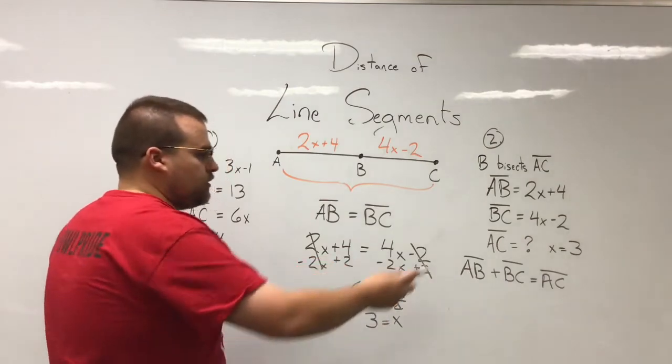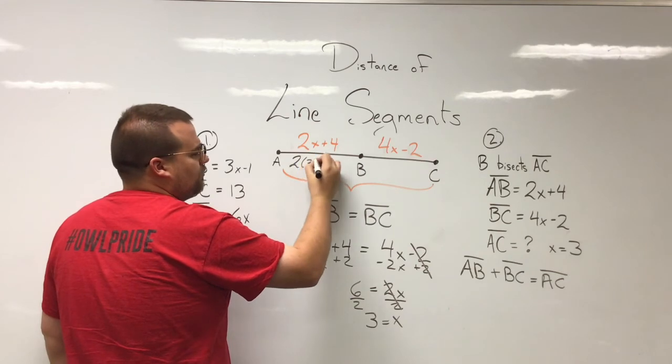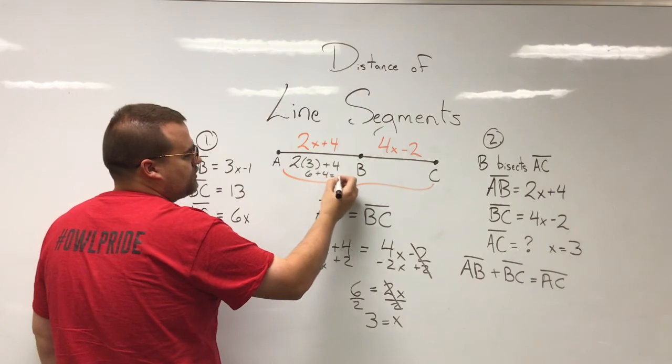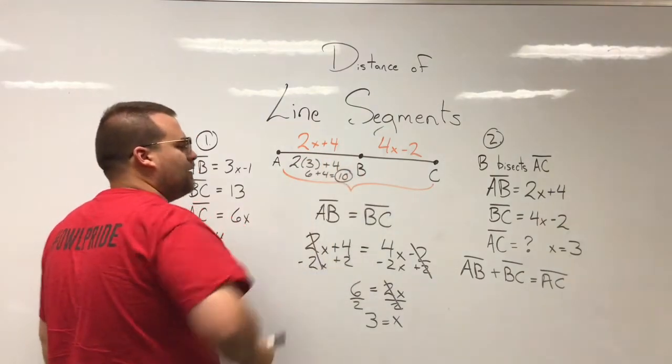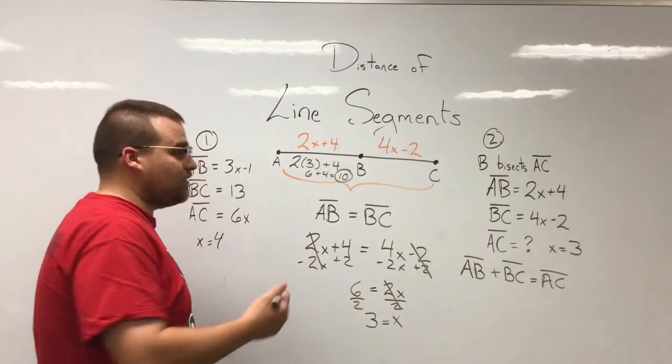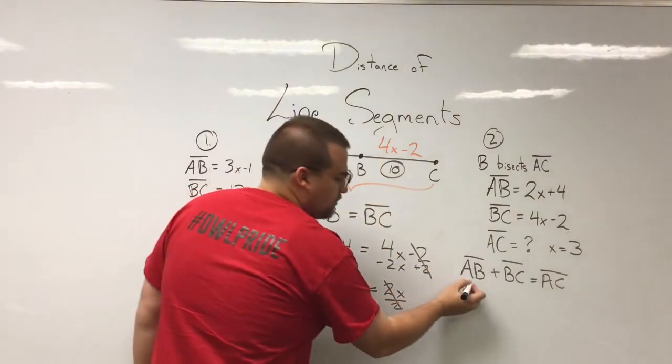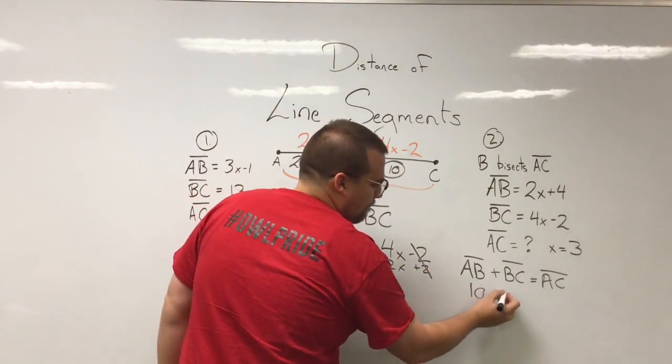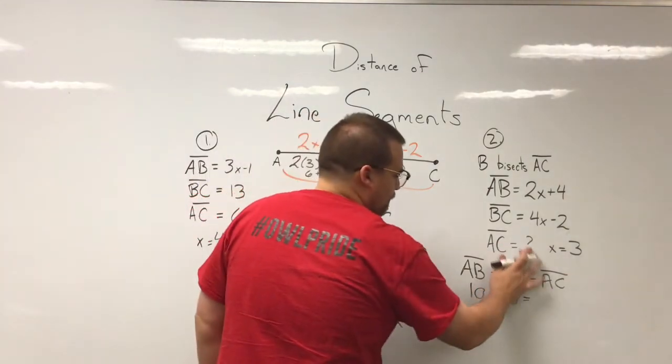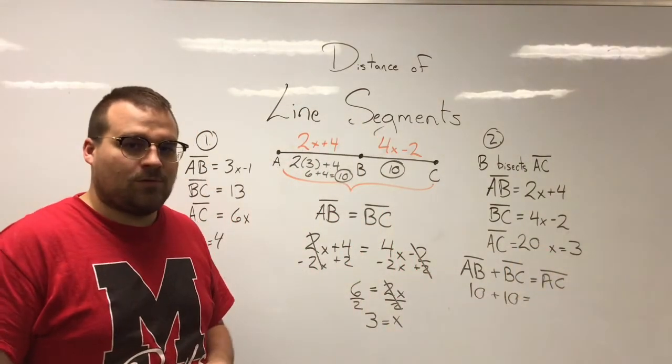So let's go ahead and take that value of x and plug it in. So 2, and instead of x I'll write 3, plus 4. Now 2 times 3 is 6, and 6 plus 4 means this line segment is 10. AB is 10. Do we even need to plug it into this one? No we don't, because B is the midpoint, so they're equal, so that one's 10 as well. So really we're saying AB is 10, BC is 10, so AC must be, yeah, AC is 20 units long.